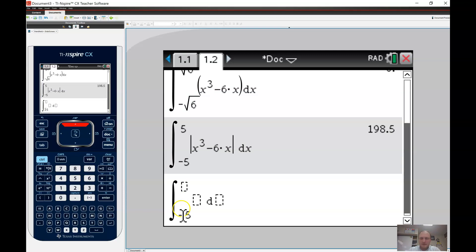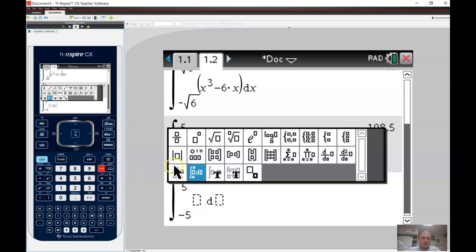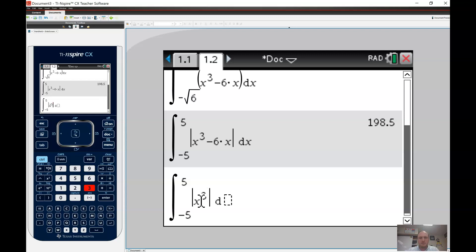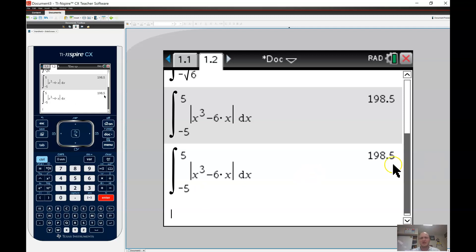And I'm just going to show you the other way to calculate this indefinite integral here. So we have, and again, in the functions, here is another way that you can calculate the integral. So from negative 5 to 5, and I'll enter the absolute value of x cubed minus 6x dx. Okay, and you get 198.5. So notice here, same exact values. Just a different way of computing the integral.